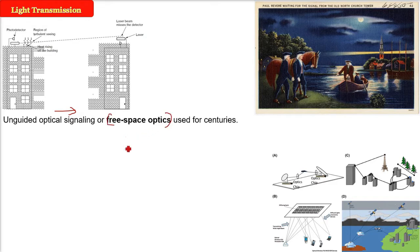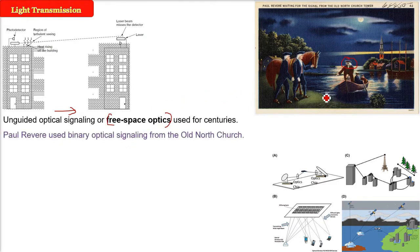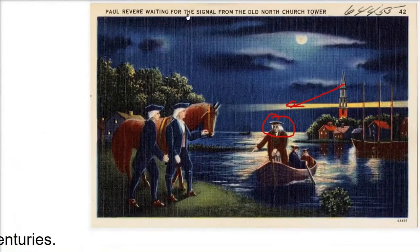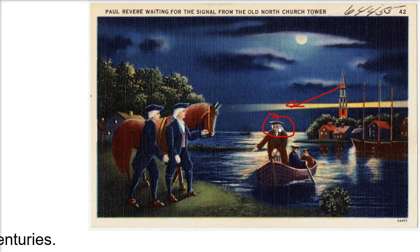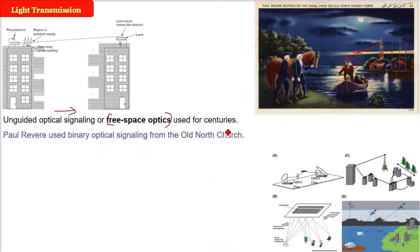How do you know? You see here — Paul Revere. He was using binary optical signaling from the Old North Church. Let me show you the picture. This is the actual picture and this actually happened. This is Paul Revere waiting for the signal from the Old North Church tower. At that time also, free space optics communication was taking place.